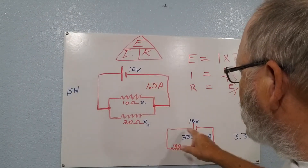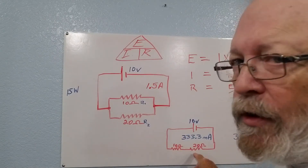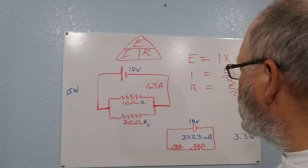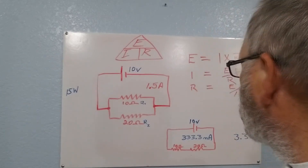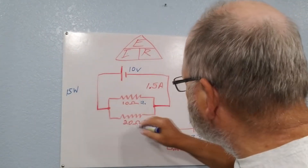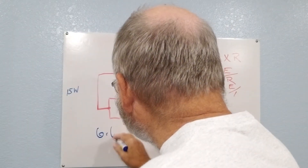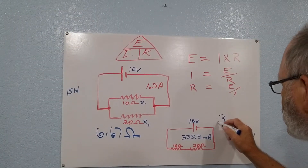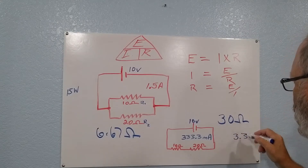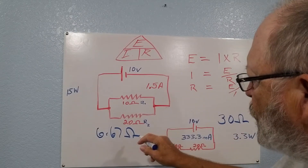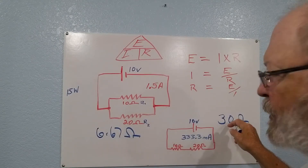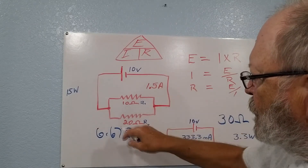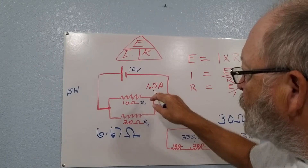So with the same two resistors and 10 volts, putting them in series draws less current than putting them in parallel. The series total resistance is 30 ohms; the parallel total is 6.67 ohms. As you increase the resistance you decrease the amperage, and as you decrease the resistance you increase the amperage.